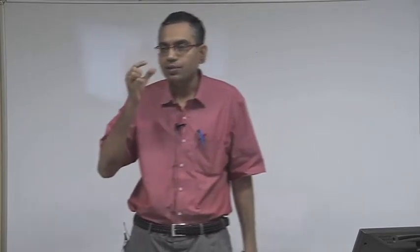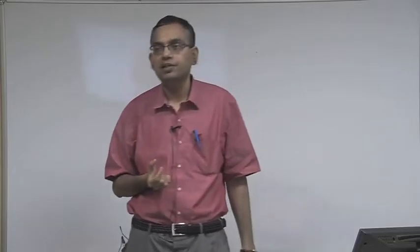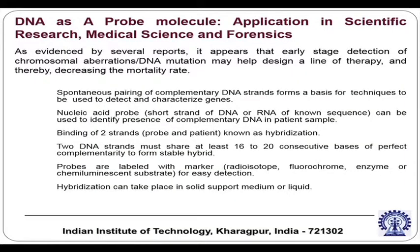A particular DNA sequence mates with its corresponding complementary sequence, and if this is a successful mating with a complementary DNA sequence, this process is known as DNA hybridization. Through this process you can identify diseases. Nucleic acid probes can be used to identify the presence of complementary DNA in a patient sample, and this binding of 2 strands is known as hybridization.